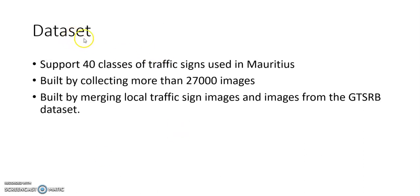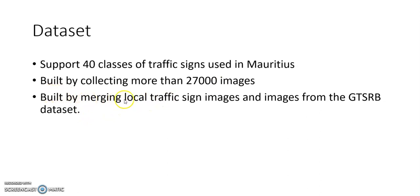The dataset supports 40 classes of traffic signs in Mauritius. The 40 classes chosen were the most commonly used traffic signs in Mauritius. The dataset was built by collecting more than 27,000 images. Therefore, the performance of the system will be quite accurate. As mentioned earlier, it was built by merging the local traffic sign images and images from the GTSRB dataset.